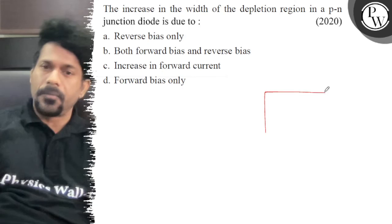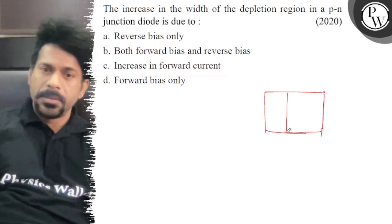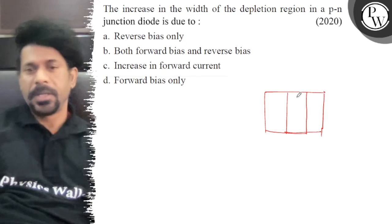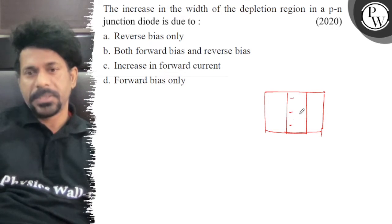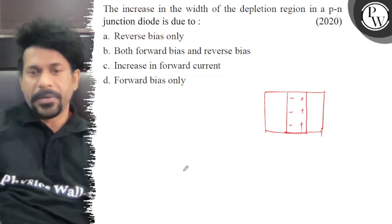When we apply a reverse bias across a p-n junction, this is the depletion region with negative and positive immobile ions. There is a depletion layer, and the electric field due to this depletion layer is from plus to minus.